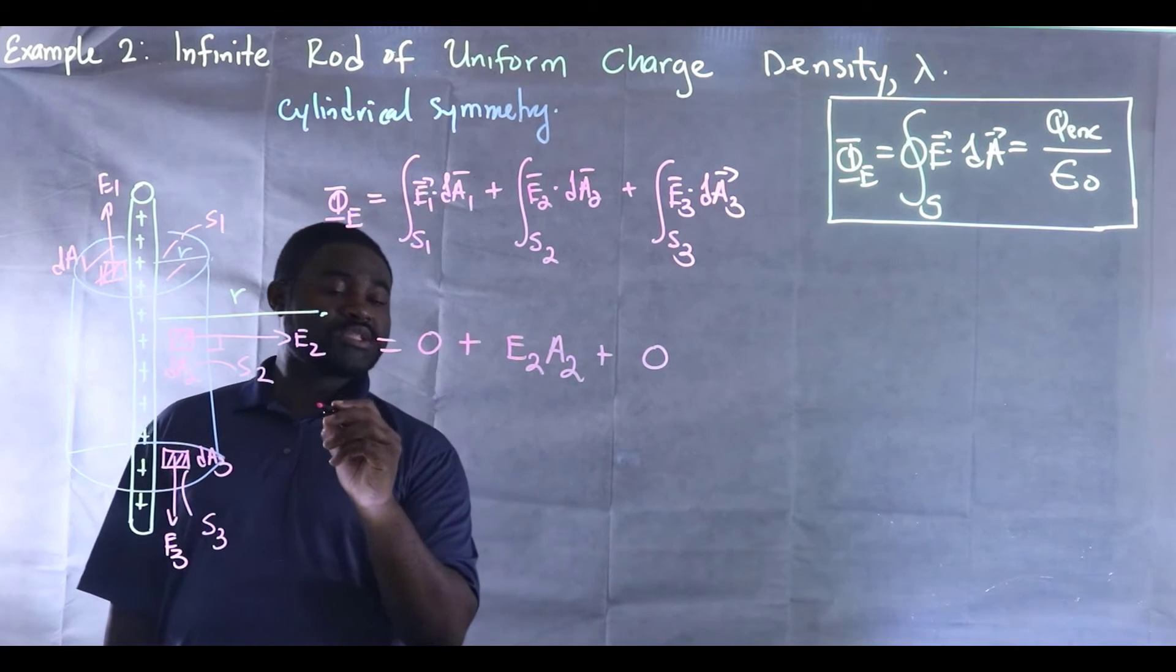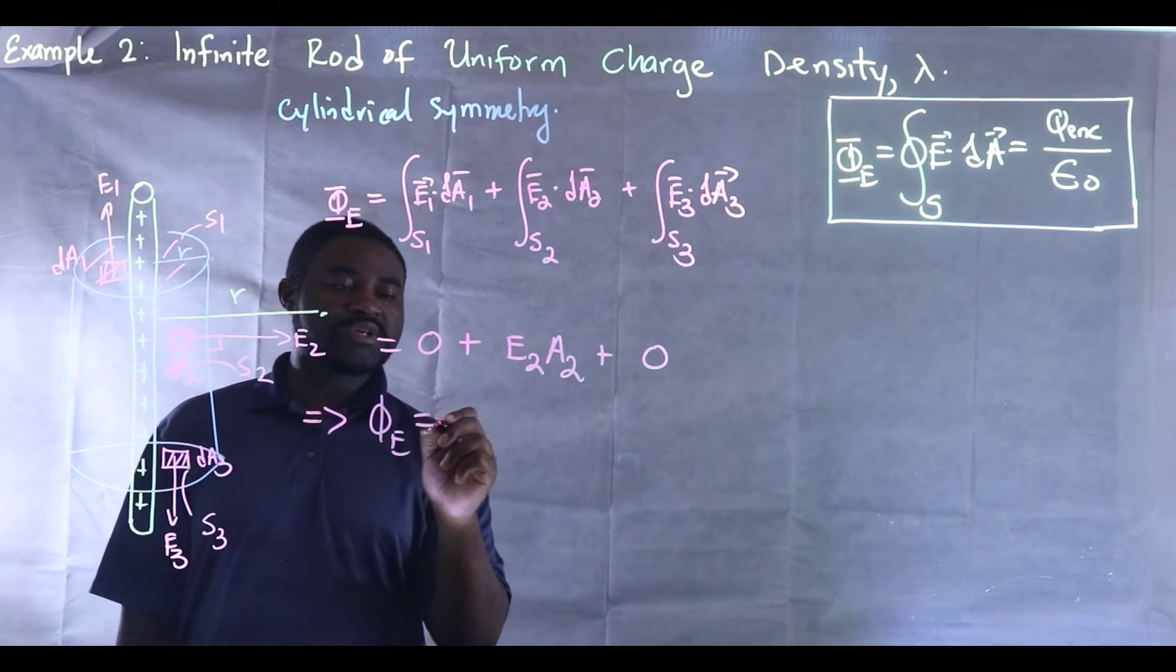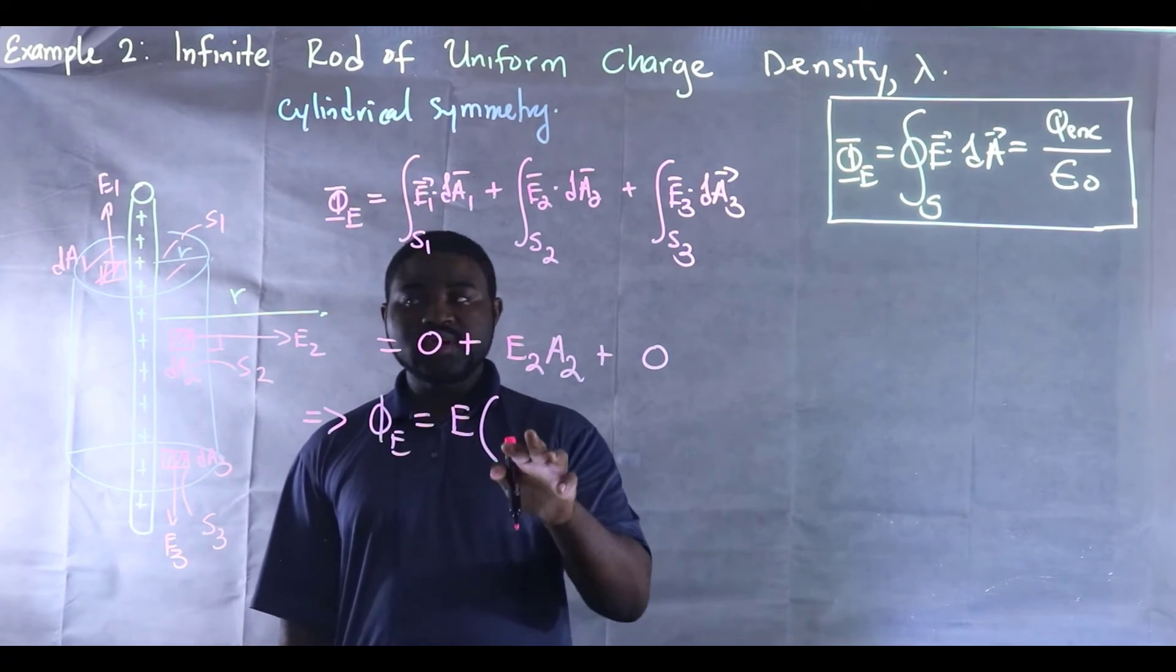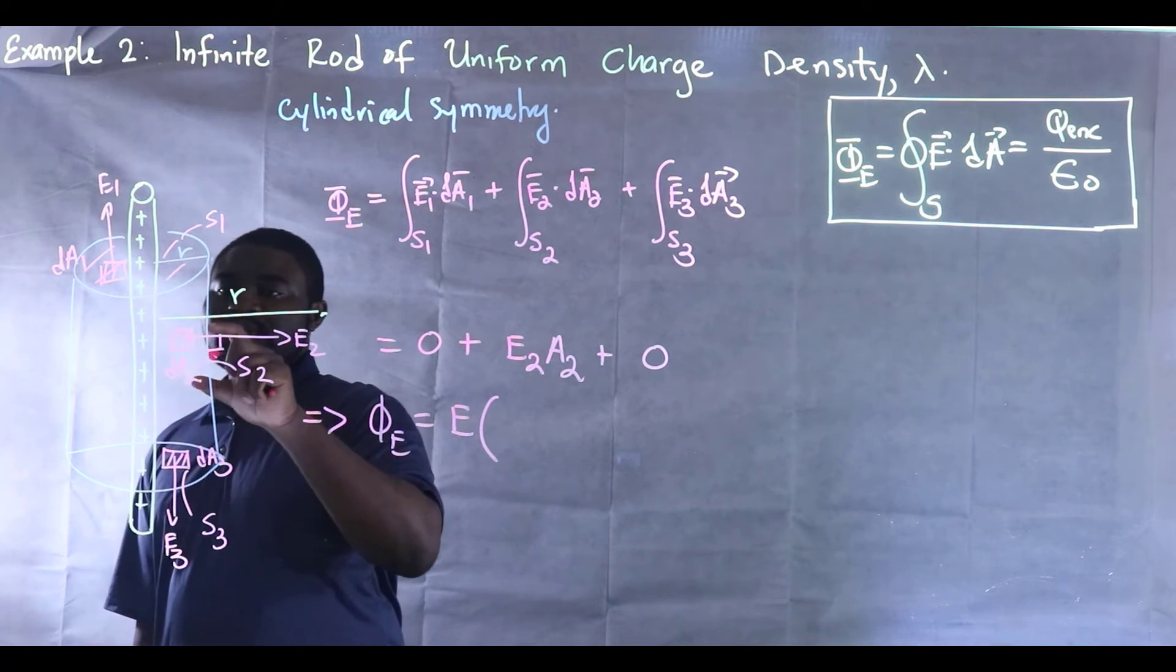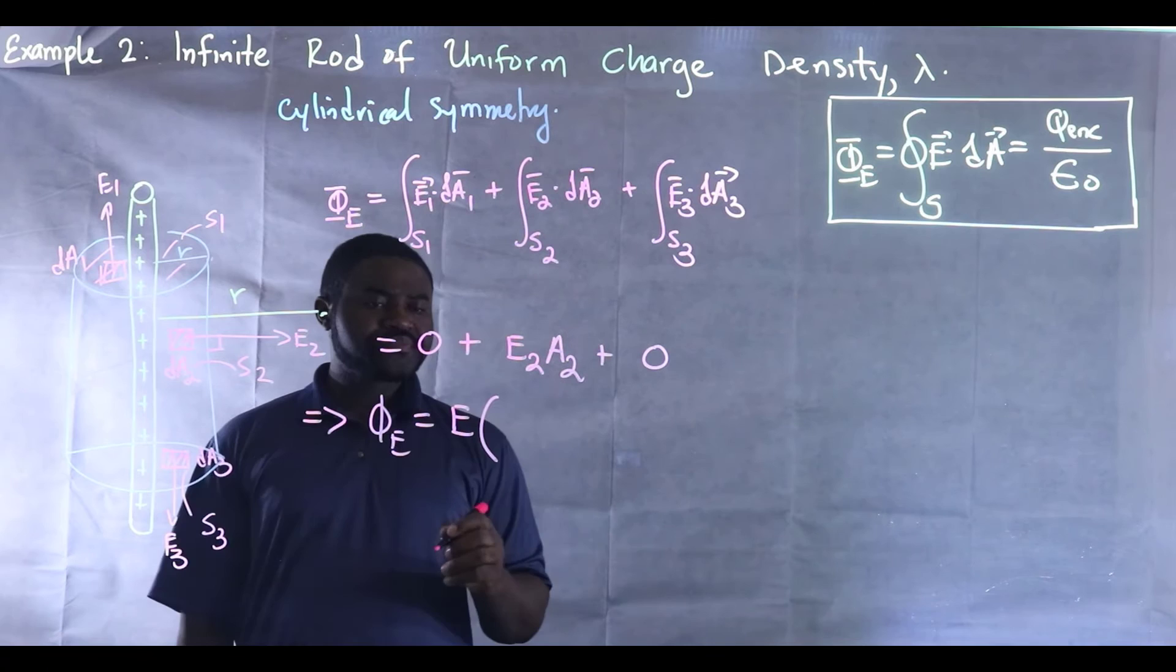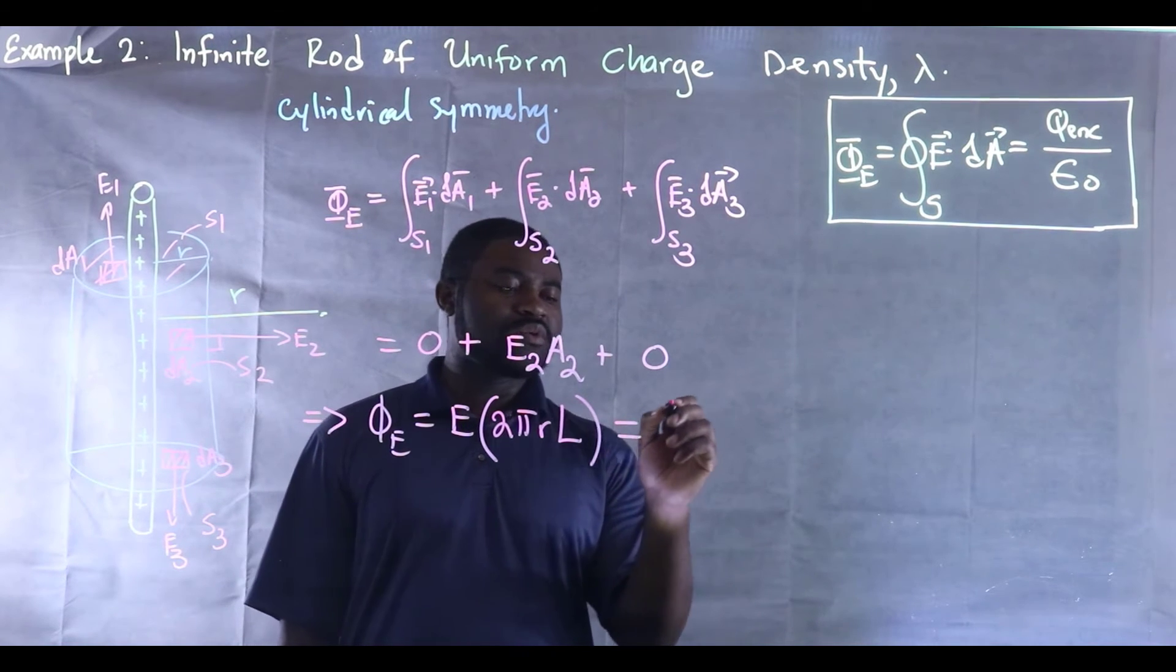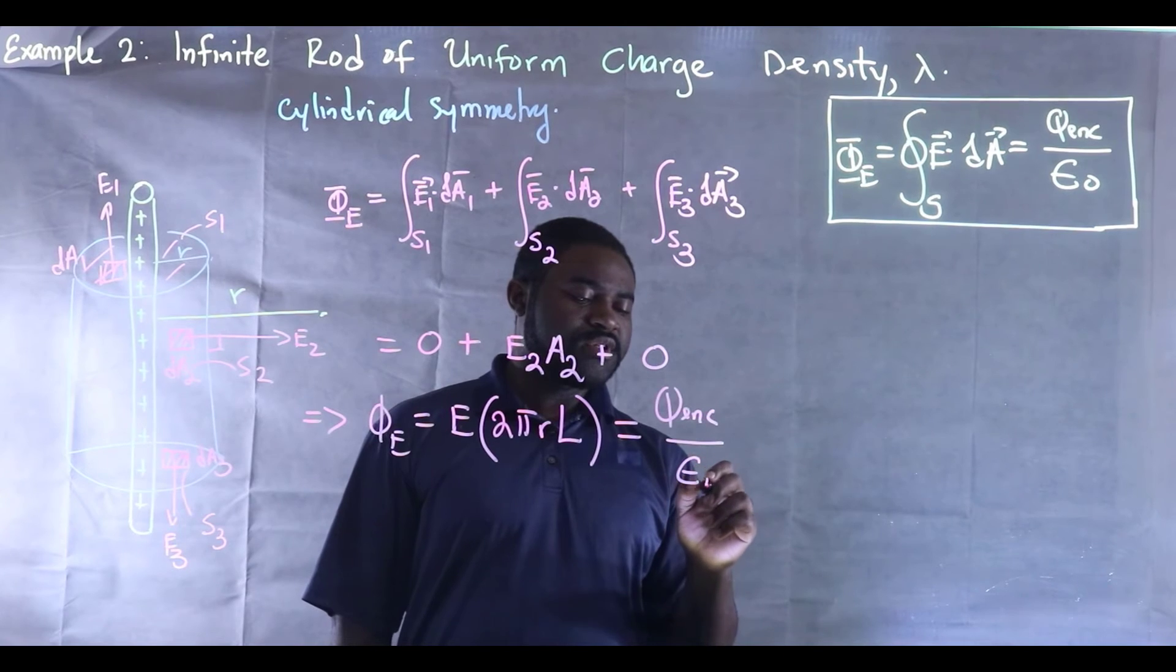So this essentially means that the electric flux through the surface is equal to E multiplied by the area of this surface. And this is a cylinder. So the area of a cylinder is equal to 2πRL. And all of these should be equal to the charge enclosed divided by epsilon-not.